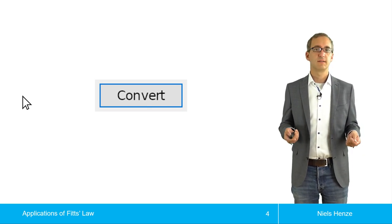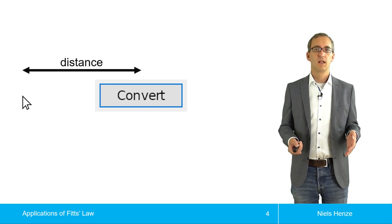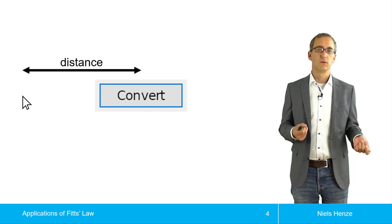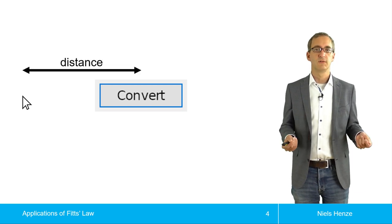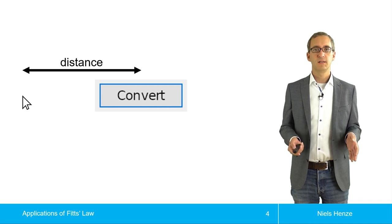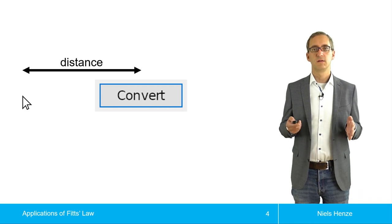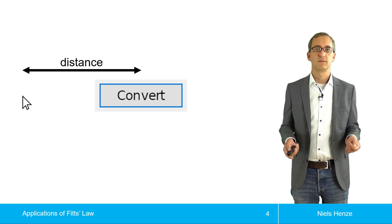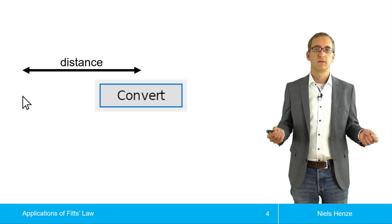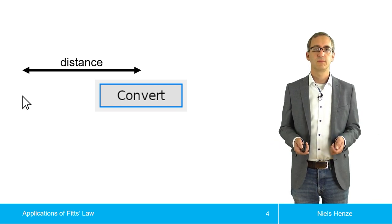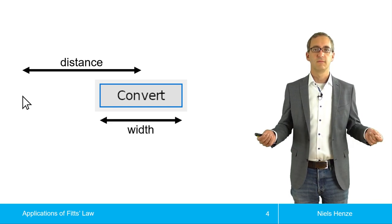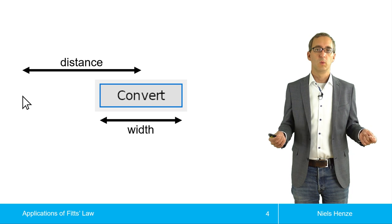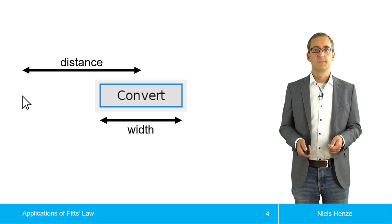You just take the center of the button, then we know the position of the pointer, and then we know the distance. Similarly, we can figure out the size of the button using the same principle — you just take how wide the button is.